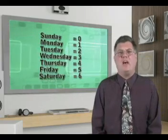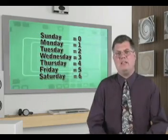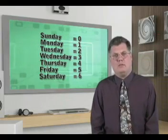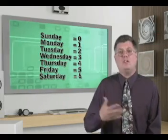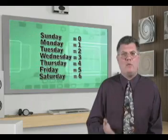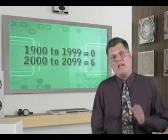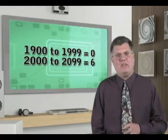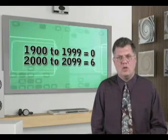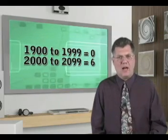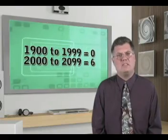The next thing we need to know is the value of the day of the week. This is the easiest. Sunday equals zero, Monday equals one, Tuesday equals two, and so on and so forth, to Saturday, which equals six. Now the century. From 1900 to 1999, the value is zero. From 2000 to 2099, the value is six.